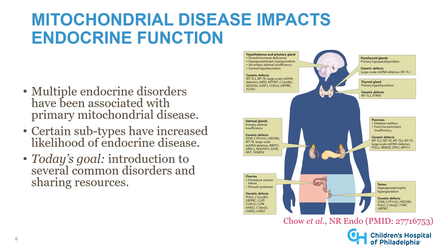Mitochondrial disease impacts endocrine function in many ways, and multiple different endocrine disorders have been associated with primary mitochondrial disease. Certain subtypes of mitochondrial disease, whether genetic or phenotypic, are associated with increased likelihoods of endocrine disease. This is illustrated by the schematic at right, showing the range of endocrine organs — from hypothalamus, pituitary, parathyroid, thyroid, pancreas, adrenal, ovary, and testes — that are affected by mitochondrial disorders, along with the associated genetic defects.